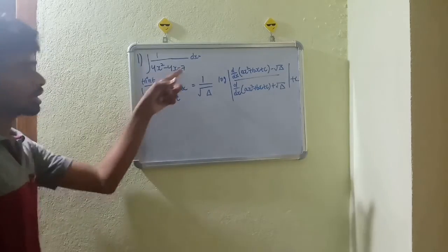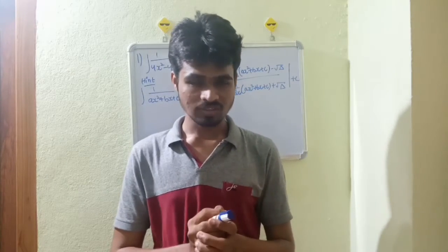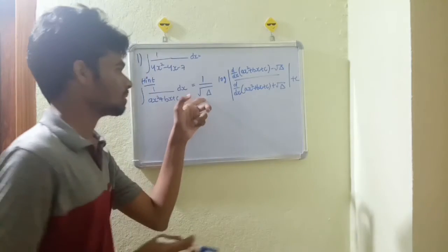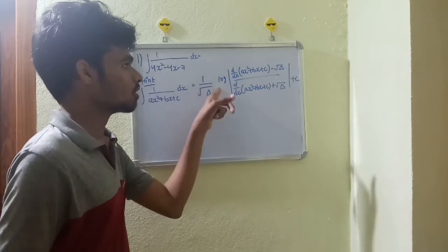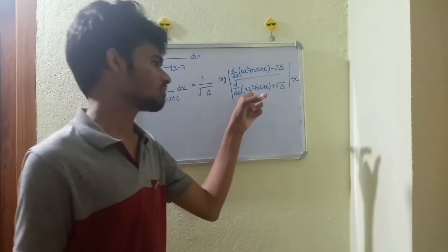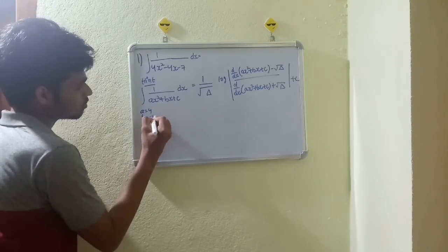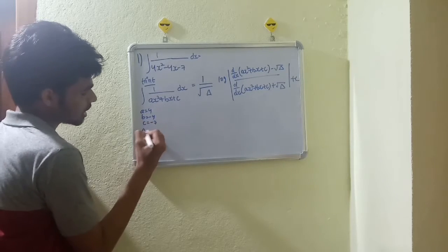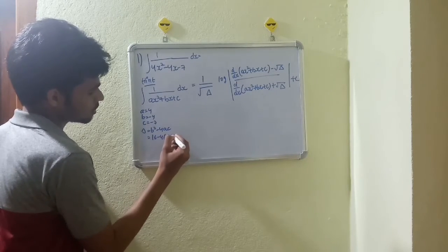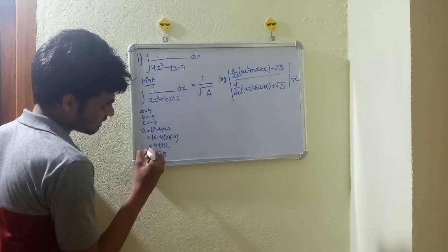Here, since b² is negative and c is negative, we use the cos h inverse case. So delta equals b² minus 4ac: 16 minus 4 times a-value 4 times minus 7. That gives 16 plus 112 equal to 128. Delta value is 128.